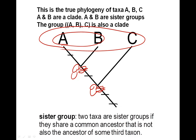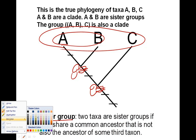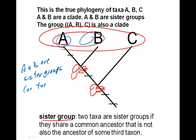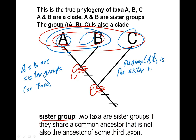Two taxa are sister groups if they share a common ancestor that is not the ancestor of a third taxon — basically, two groups are sister groups if they occur in a monophyletic group. So A and B are sister taxa, and the group A-B is a sister taxon of C. That's just another way of saying A and B form a monophyletic group and A, B, and C form a monophyletic group.